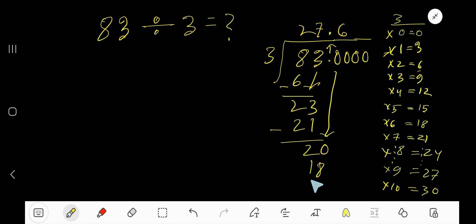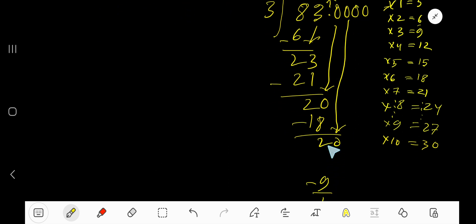6 times 3 is 18. Subtract 2. Bring down another zero. Again, 3 goes into 20, 6 times. 6 times 3 is 18. Subtract 2. Bring down another zero.